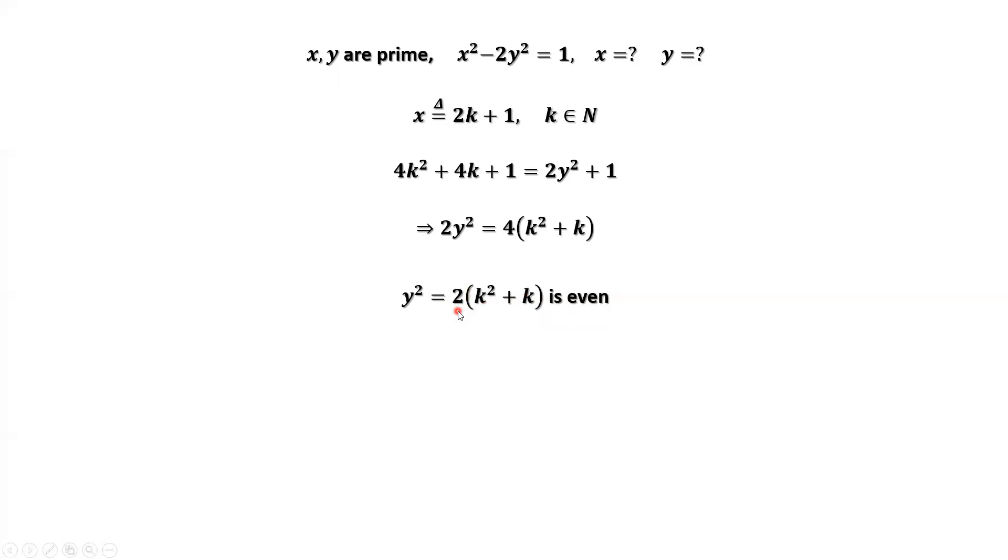Here we have a factor of 2. This implies y squared is even. If y squared is even, y must be even. From the given condition, y is a prime number. Y is a prime number and also even. We only have one number, which is 2, that satisfies this condition. This implies y equals 2.